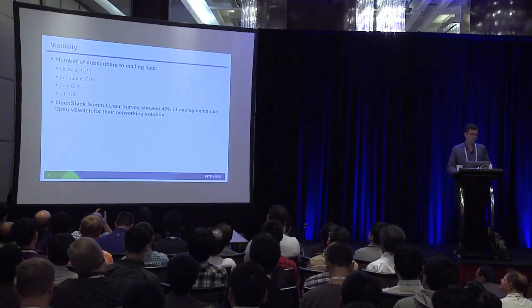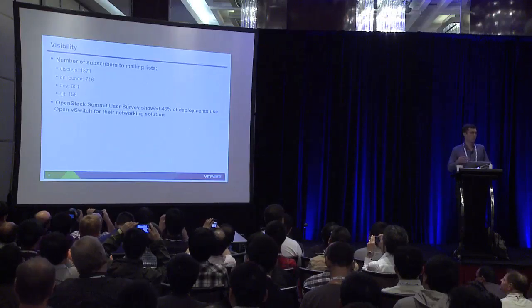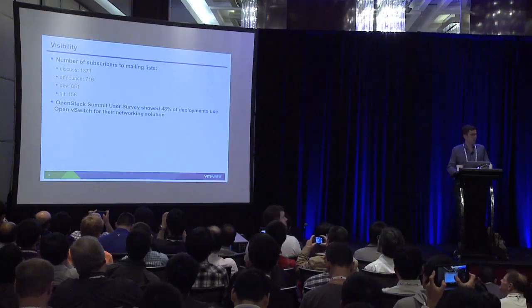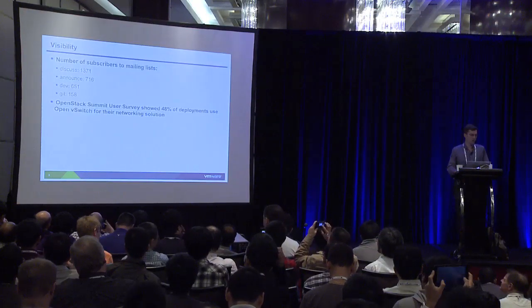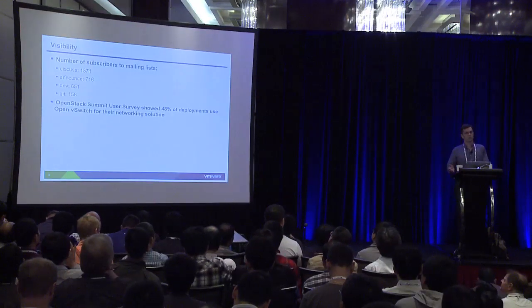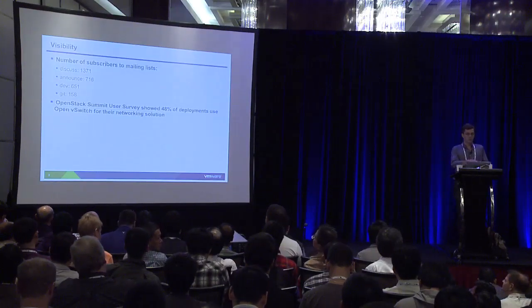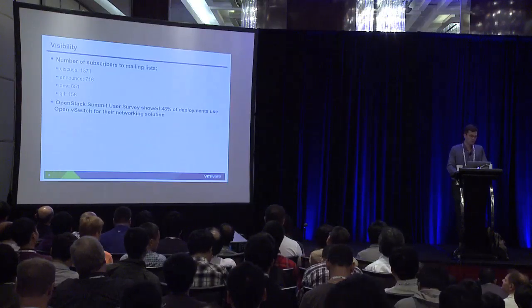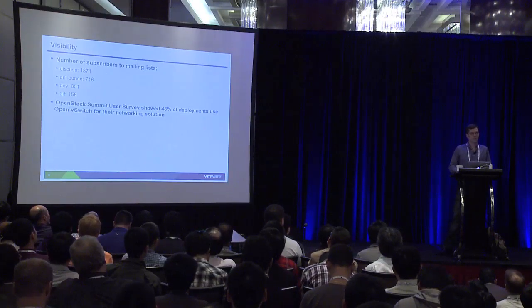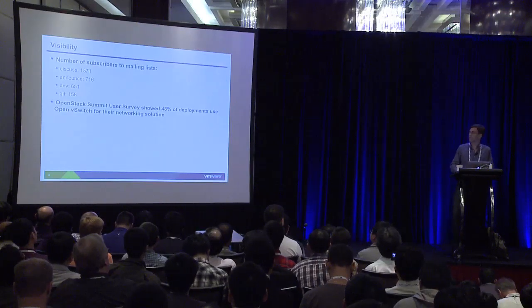The project has picked up quite a bit of steam over time. These are the different mailing lists we have. The discuss list is for general users who have questions. Announce is where we announce new versions of OVS. All development happens on the dev mailing list — that's where code reviews happen. When things get committed, there's a git mailing list. I saw yesterday that there was an OpenStack user survey and about 48% of deployments said they use Open vSwitch.